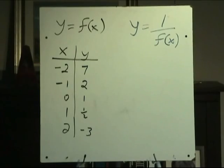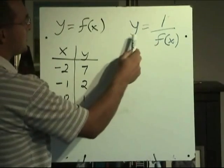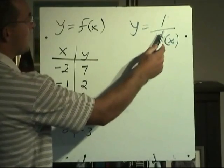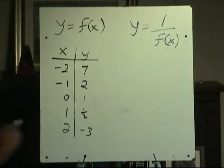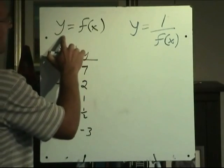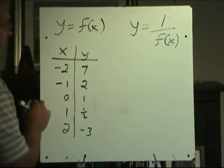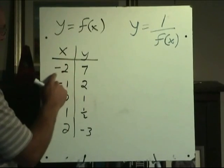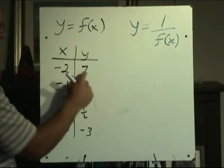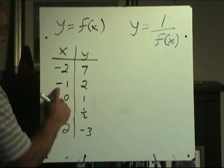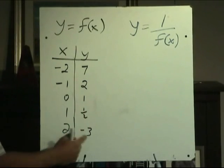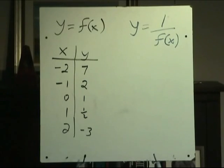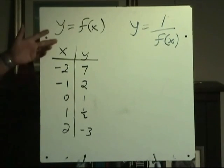The next thing we're going to consider is a reciprocal function. The reciprocal function is given by y equals 1 divided by f of x. I've got a function here y equals f of x. I've given you a table of values: when x is negative 2 the y value is 7, when x is negative 1 y is 2, x is 0 y is 1, x is 1 y is one half, and when x is 2 y is negative 3.